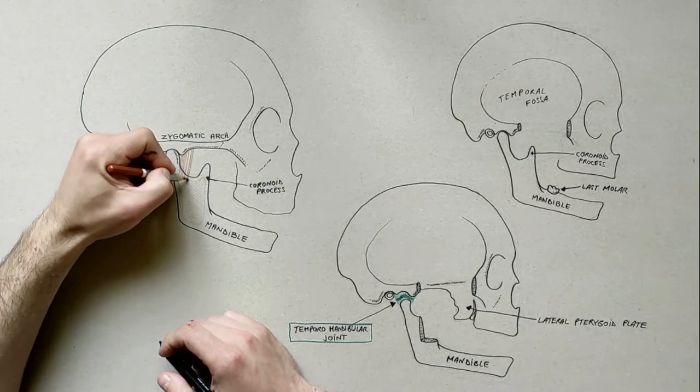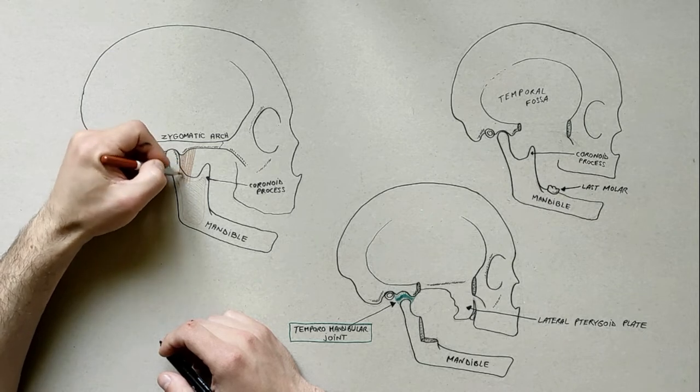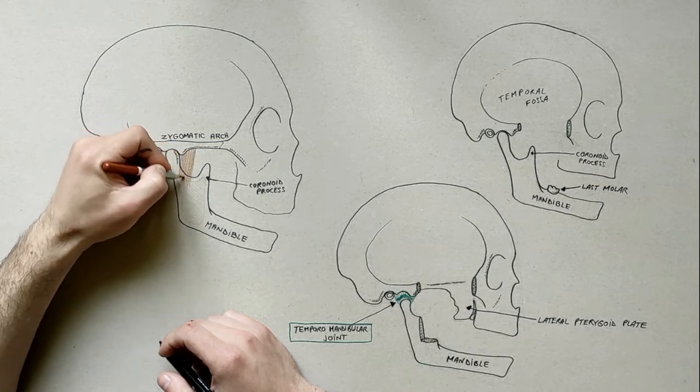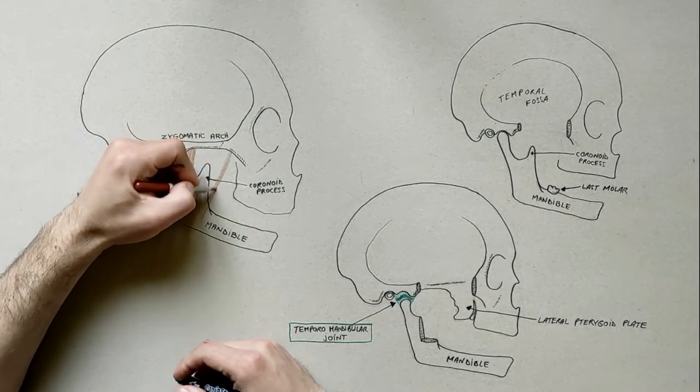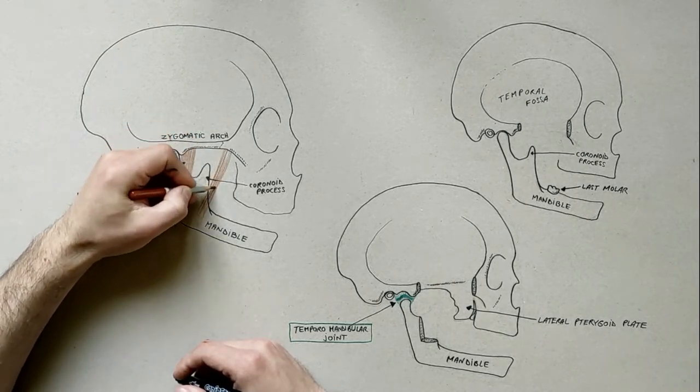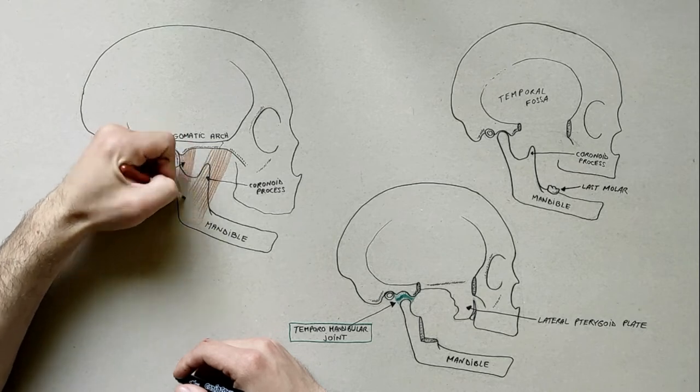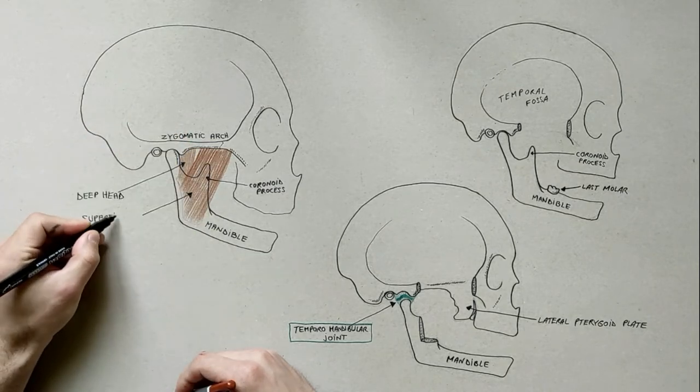The deep head is much smaller and arises from the posterior third of the lower border of the zygomatic arch. The superficial head arises from the temporal process of the zygomatic bone and from the anterior two-thirds of the inferior border of the zygomatic arch.